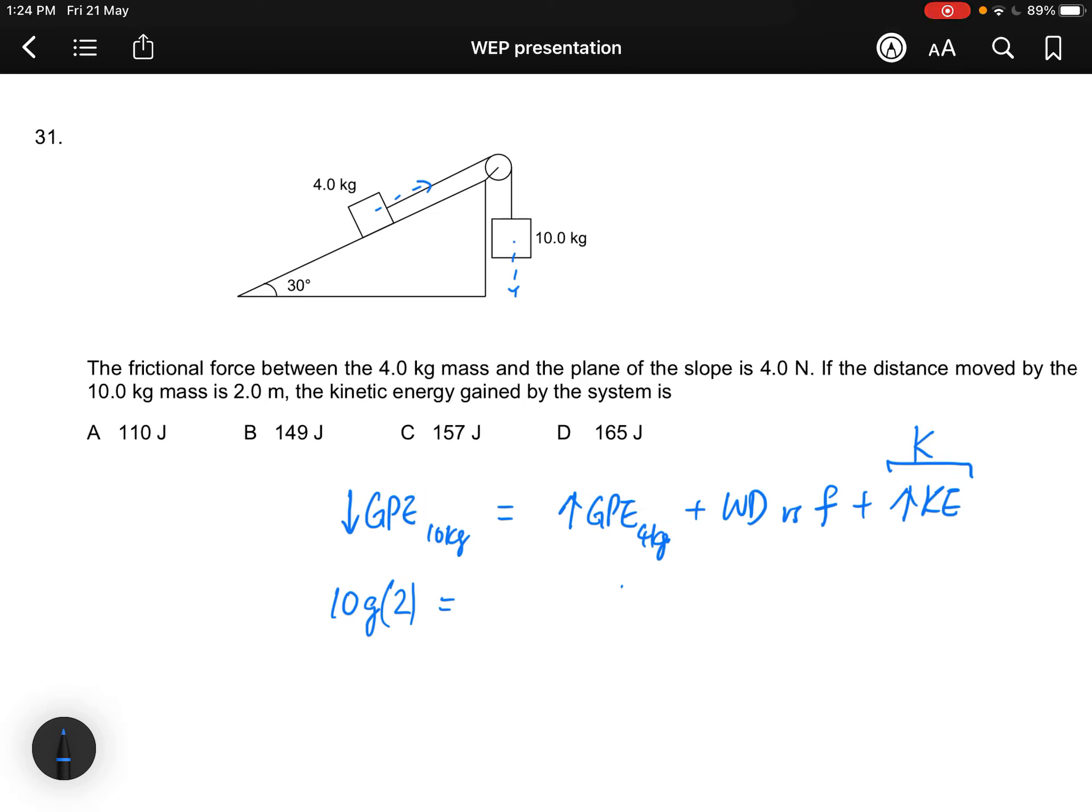The 4 kg moves up the slope by 2 meters but it will rise up by only 2 sine 30. So here will be 4g times 2 sine 30.